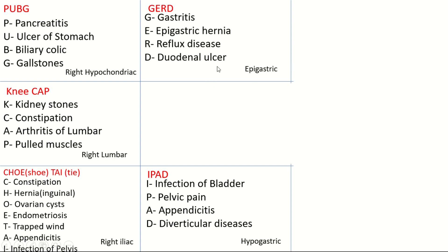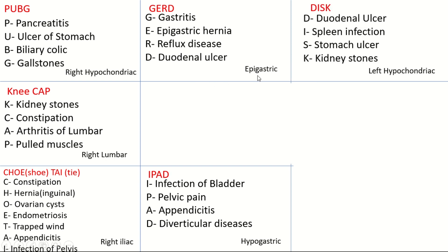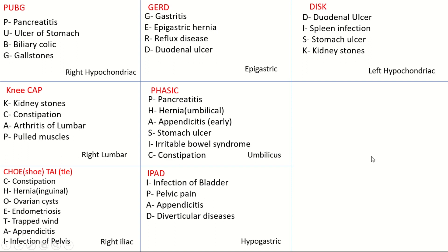On the left hypochondriac region, the mnemonic is DISK. D is for duodenal ulcer, I is for infection of the spleen, S is for stomach ulcer, and K is for kidney stones — yes, pain due to kidney stones can sometimes also be felt in the hypochondriac region.